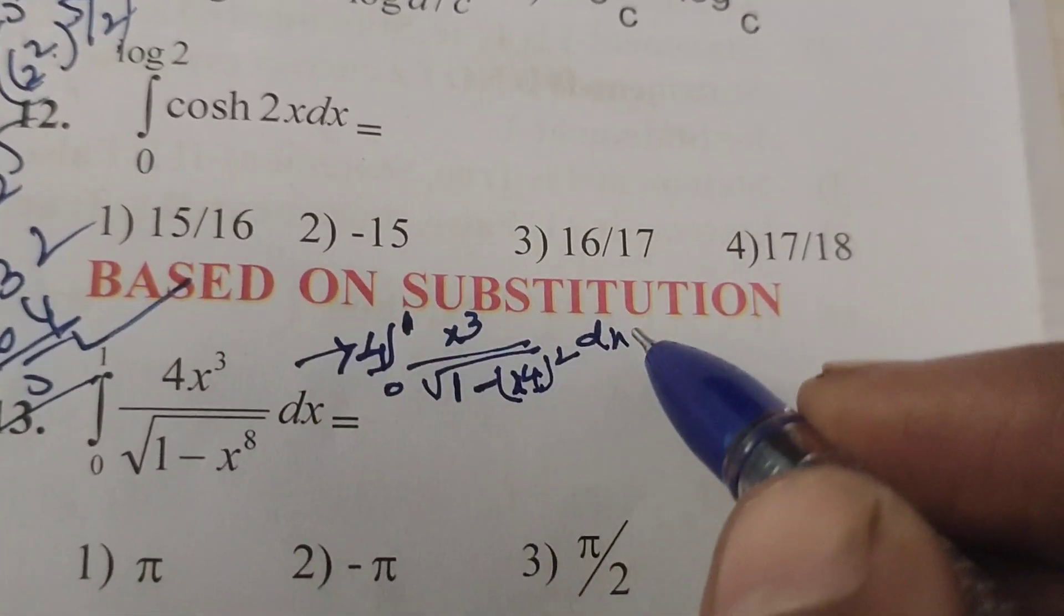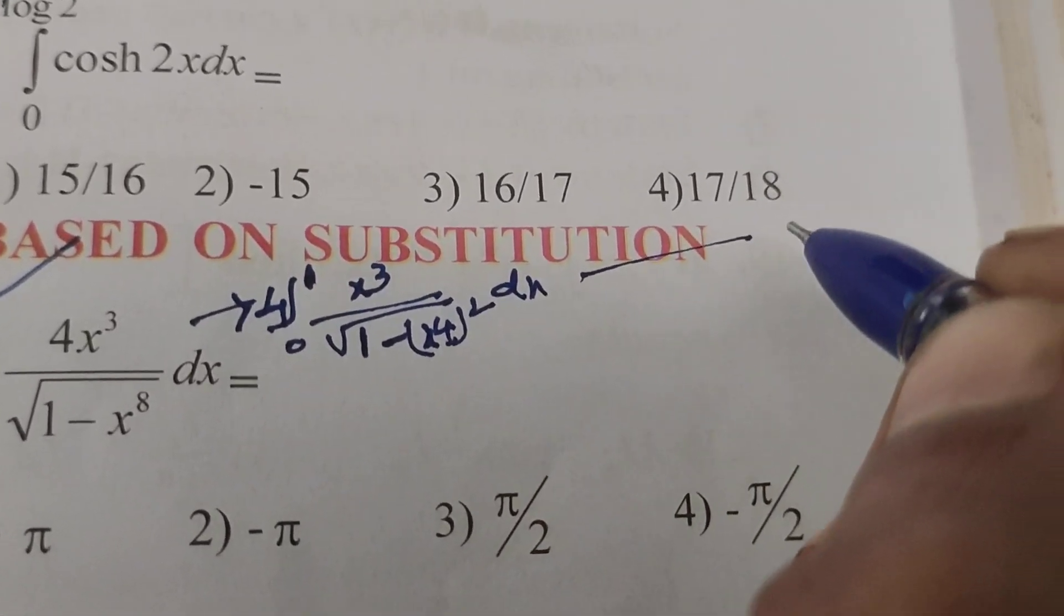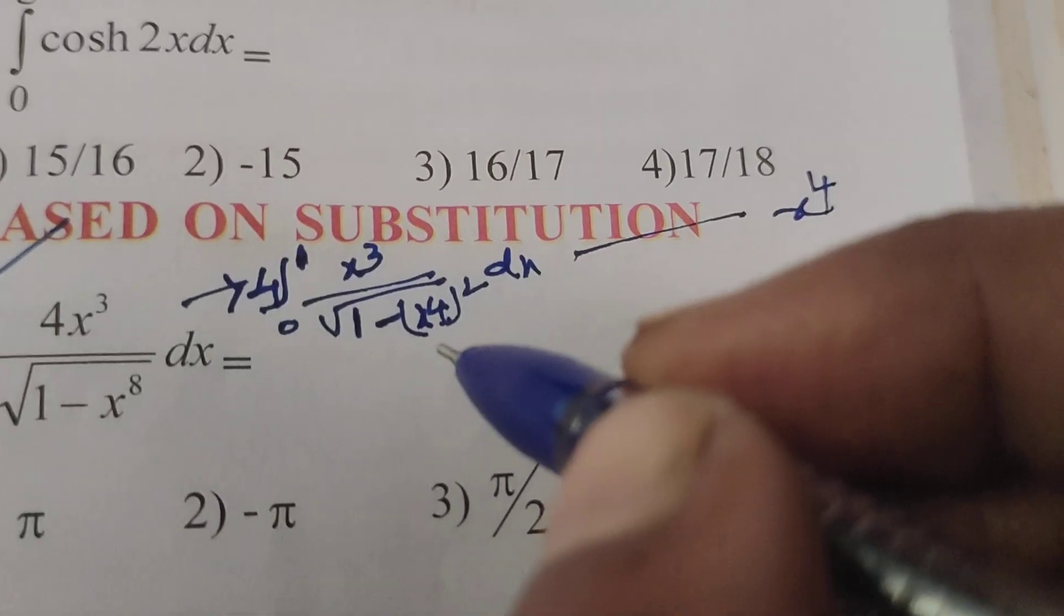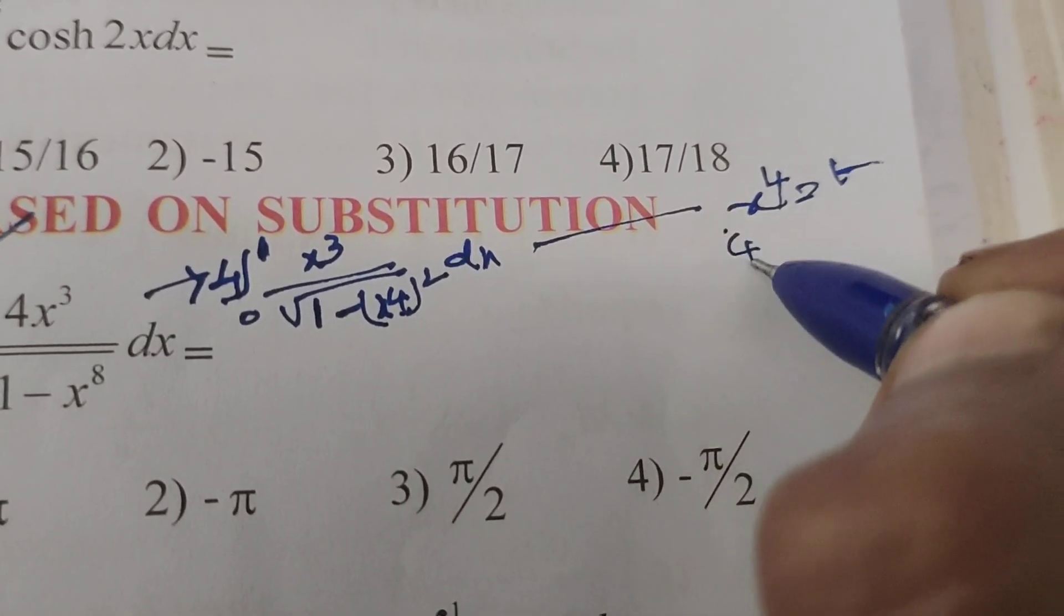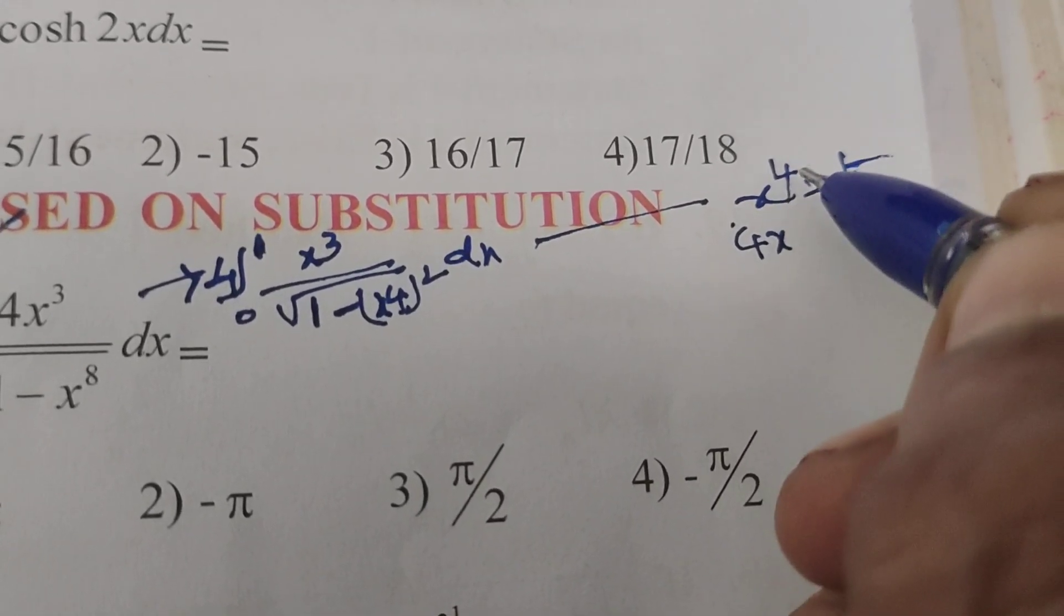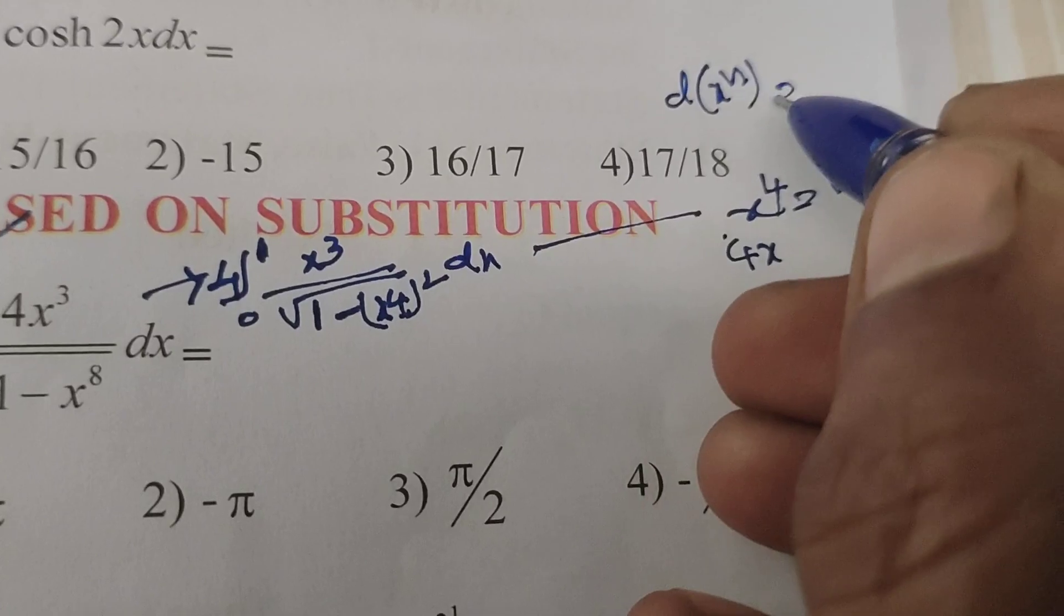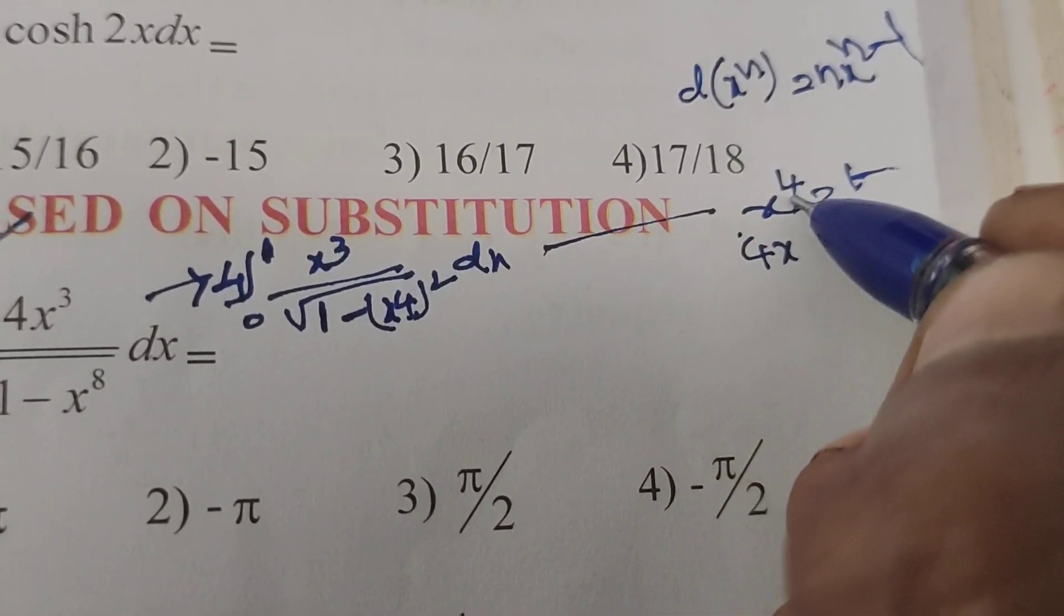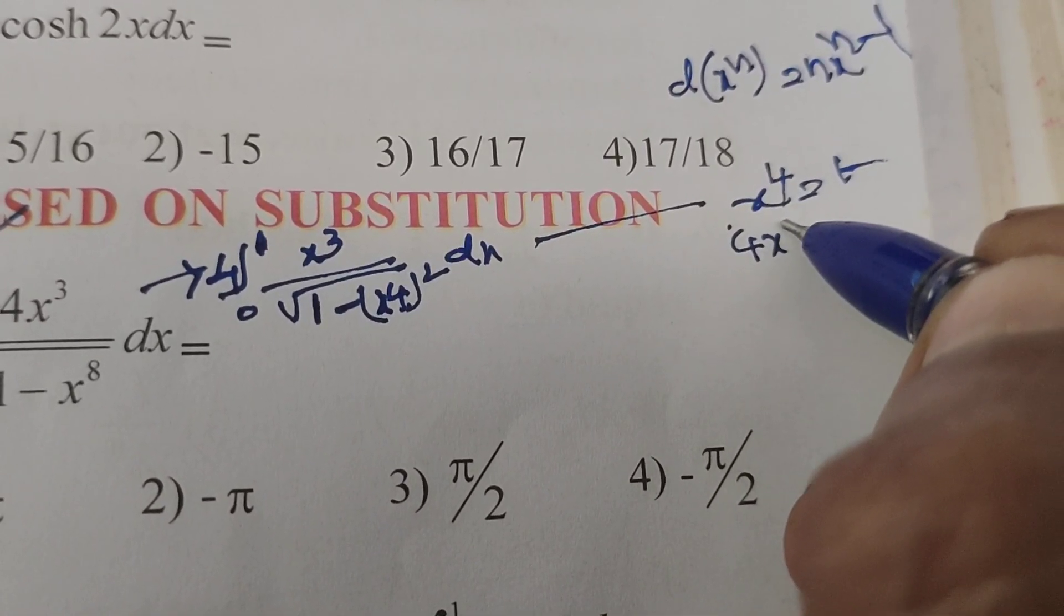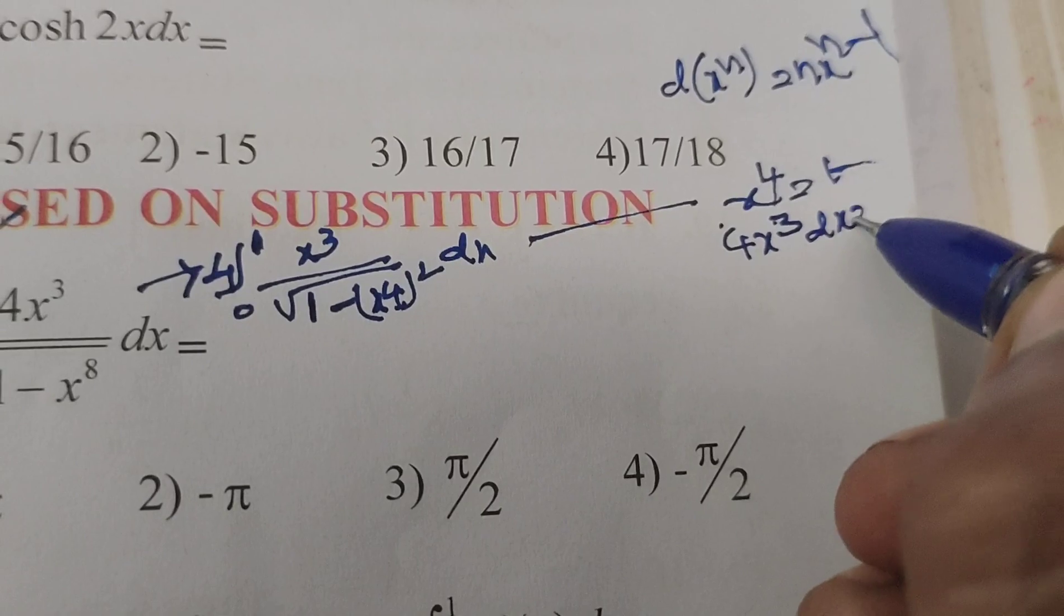Now solve the solution using substitution method. Put x⁴ equals to t. Now differentiate this: using x^n differentiation, that is n times x^(n-1). n means 4, so 4 into x⁴⁻¹, that is x³ dx equals to dt.